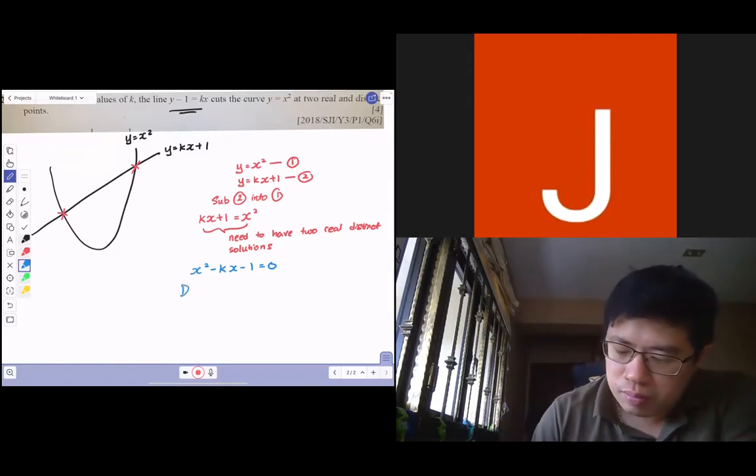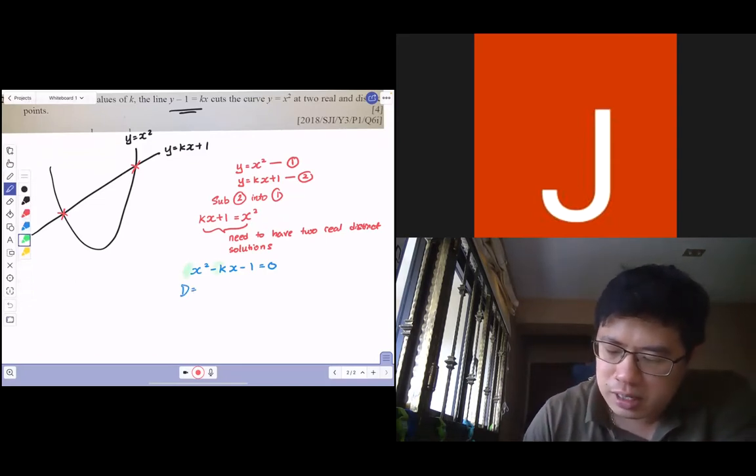So b squared minus 4ac. My a is one, my b is negative k, my c is negative one.